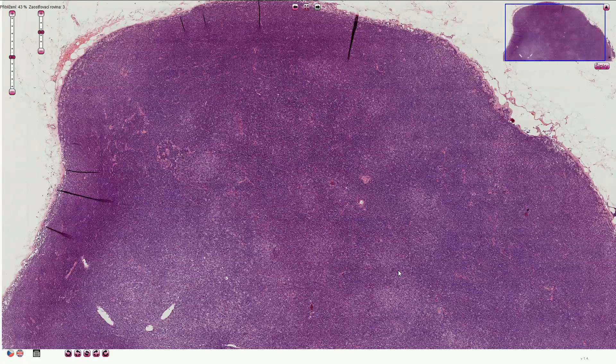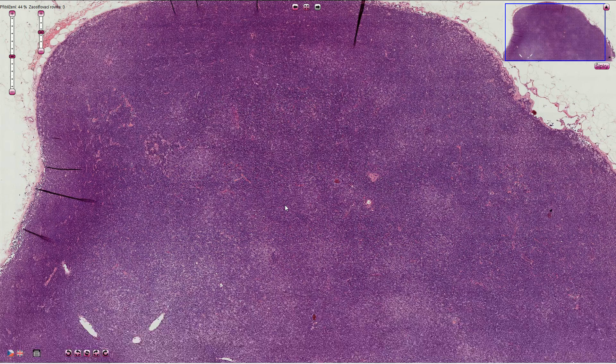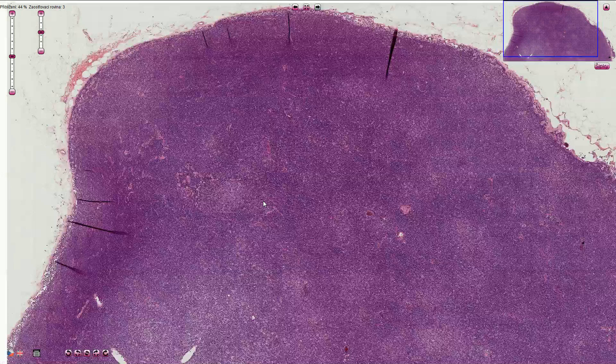When we see a lymph node that looks like this one we can suspect lymphoproliferation, or in other words, lymphoma. So let's zoom in to find out what kind of cells can be found in these diffuse and nodular areas.